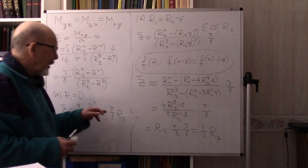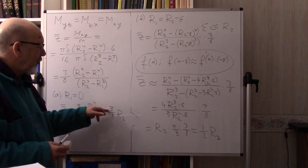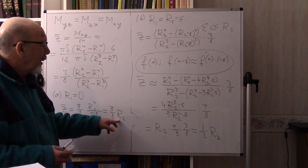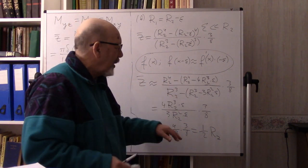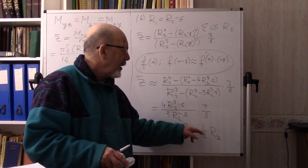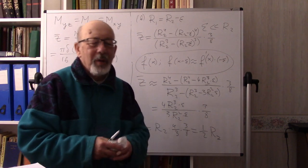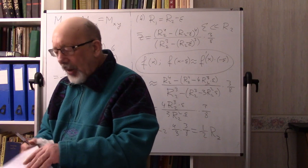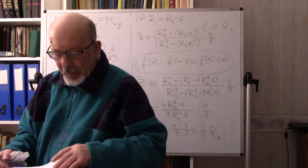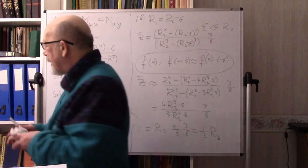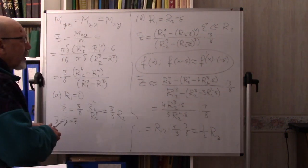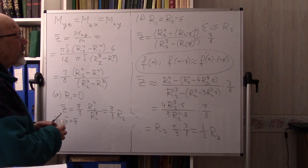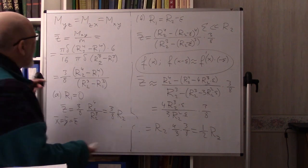For a solid one-eighth of a ball the center of mass is at (3/8)R₂, while for a very thin shell near the surface it is at (1/2)R₂ — you can see the difference. This was just to show how spherical coordinates work.